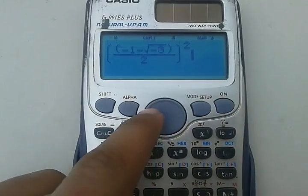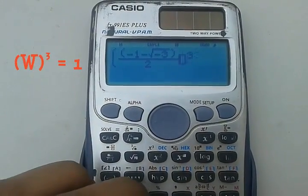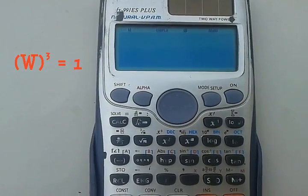Taking it square, we get the value of omega square. Taking cube will give 1. That is the property of omega: omega cube is equal to 1.